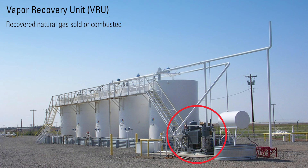Natural gas, once vented to the atmosphere, is now being recovered by a VRU and then sold or combusted depending on regulatory compliance or economics. This is becoming a more common practice among upstream producers.